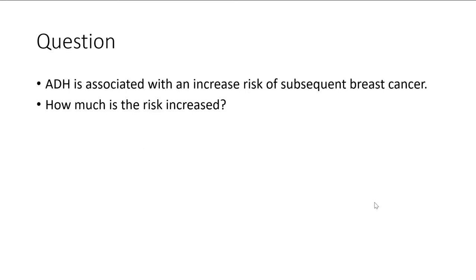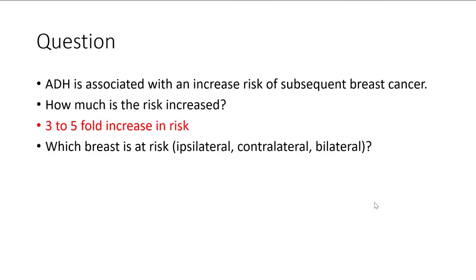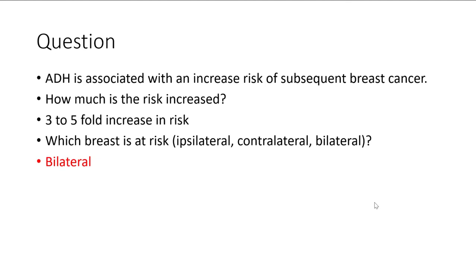Atypical ductal hyperplasia is associated with an increased risk of developing breast cancer — the risk is increased 3 to 5-fold. Which breast is at risk? It's bilateral. Again, atypical ductal hyperplasia confers a 3 to 5-fold increase in risk, and it's a general marker of risk that involves both breasts.